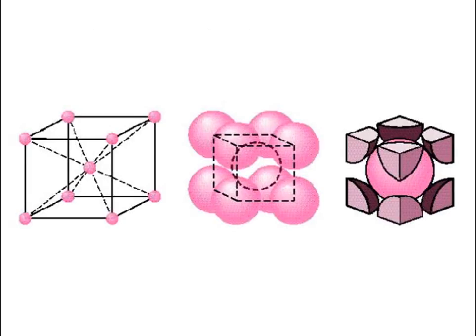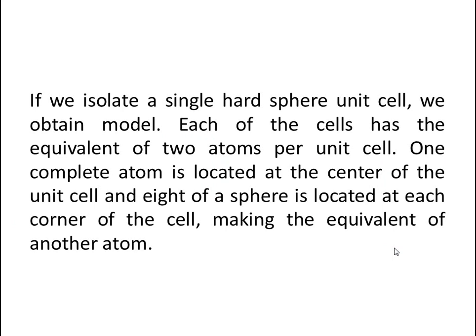In the BCC structure, there is one atom at the body center and eight atoms at the corners. Each corner atom contributes one-eighth of an atom to the unit cell, so the eight corners together make one atom. Combined with the one complete atom at the center, there are two atoms total in the BCC unit cell.